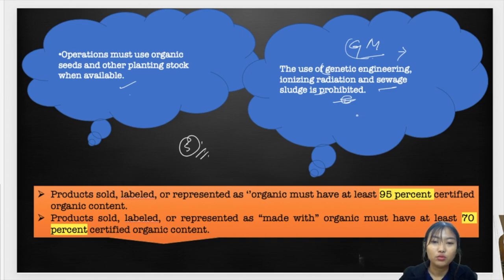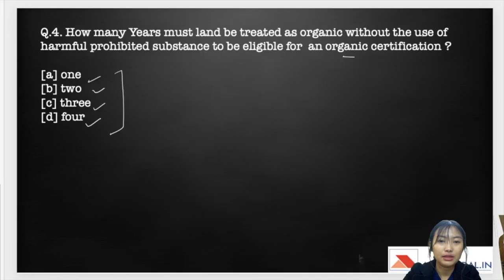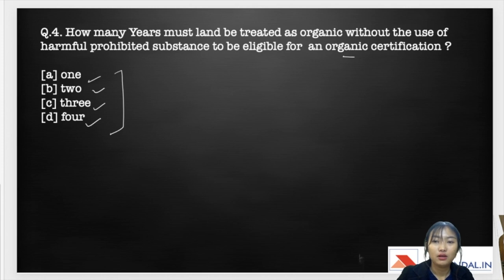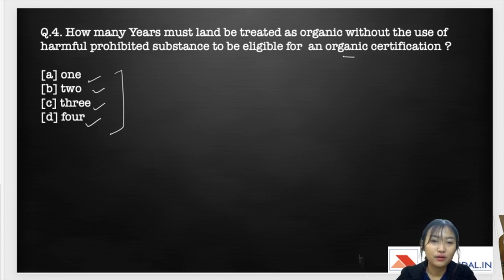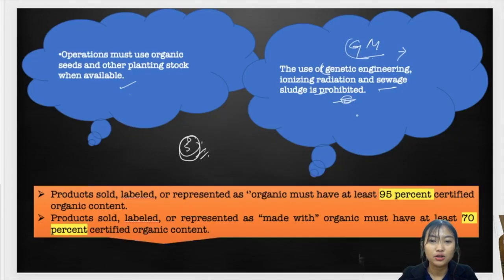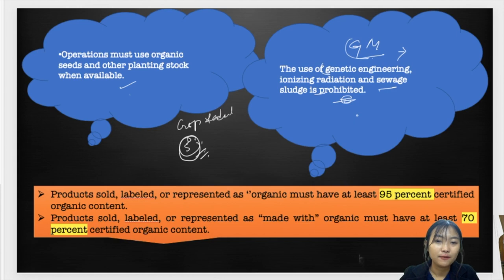There is a fifth feature under crop standards that is actually related to question four — about how many years land must be treated as organic without the use of harmful prohibited substances to be eligible for organic certification. Please comment both the fifth feature and the answer to question four in the comments section.